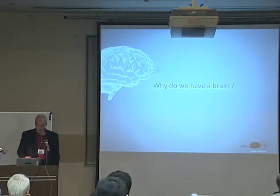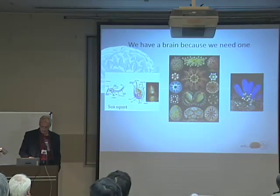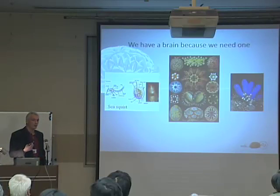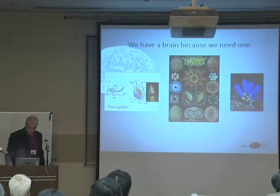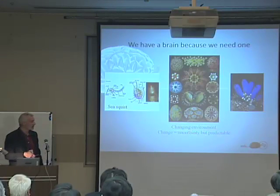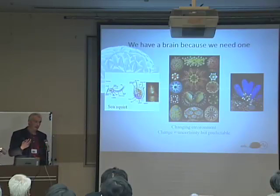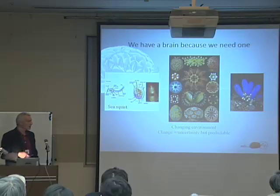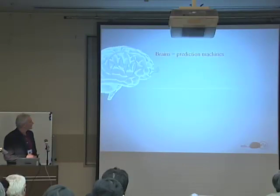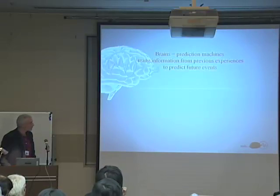Why would we have a brain? There is an interesting story, first told in the book Eye of the Cortex by Adolf Linus, about the sea squirt: when it's still in its larval stage, it swims around with a primitive nerve system, but once it decides to sit on a rock and stop moving, it basically absorbs its nervous system. So it could be considered that only if you move around or if the environment is changing quite a bit do we need a nervous system — and the change should be predictable. A completely random environment would not be beneficial for developing a brain, so brains can be considered prediction machines that use information from previous experiences to predict future events.